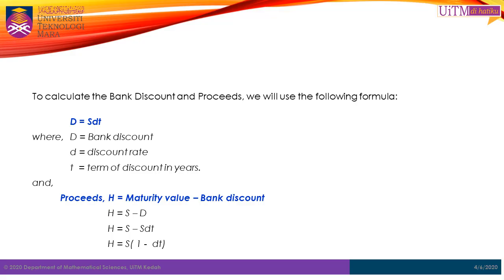To calculate the bank discount and proceeds, we will use the formula: D equals S times d times T, where capital D is the bank discount, capital S is the maturity value or amount borrowed, small d is the bank discount rate, and small T is the discount term. In addition, we can also find the amount of proceeds using the formula: H equals maturity value minus bank discount, or equivalently, H equals S multiplied by (1 minus d times T).